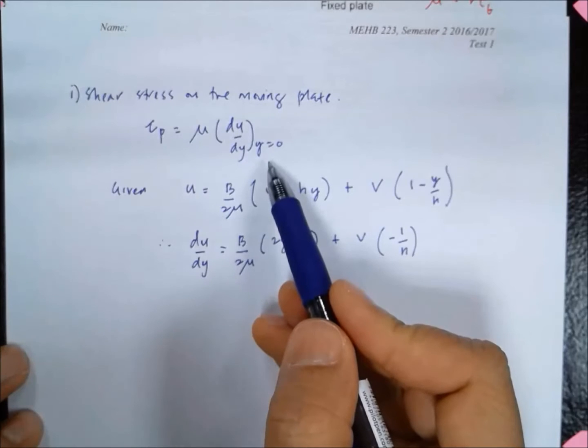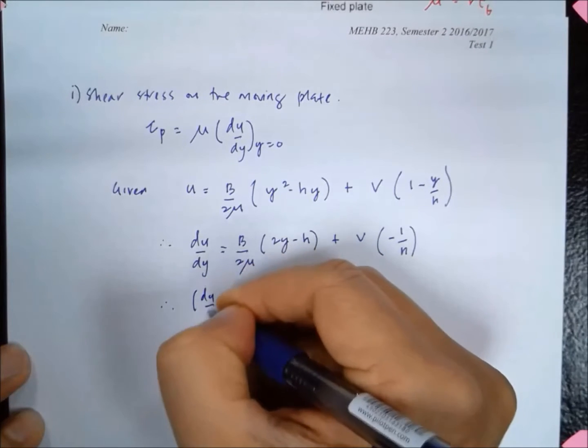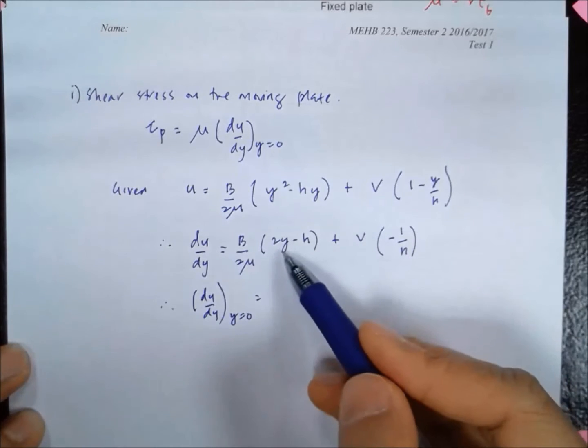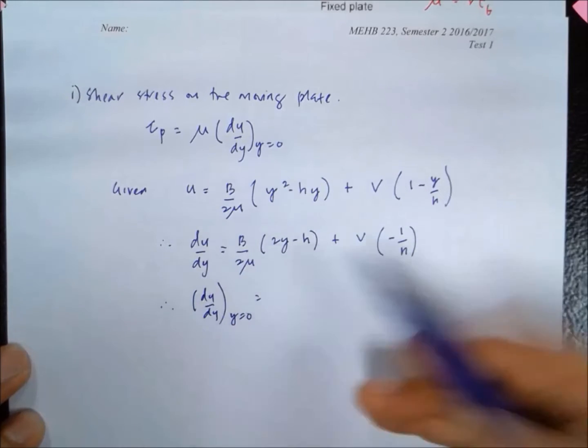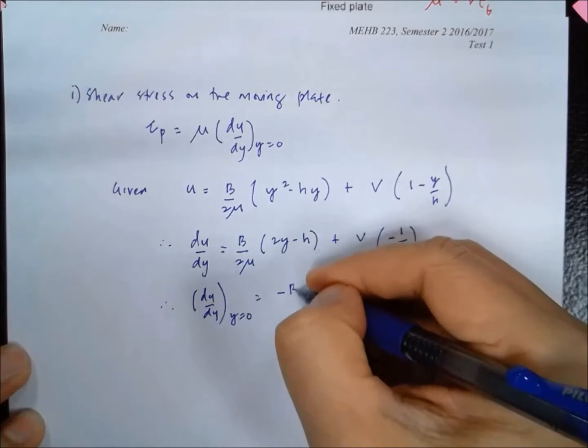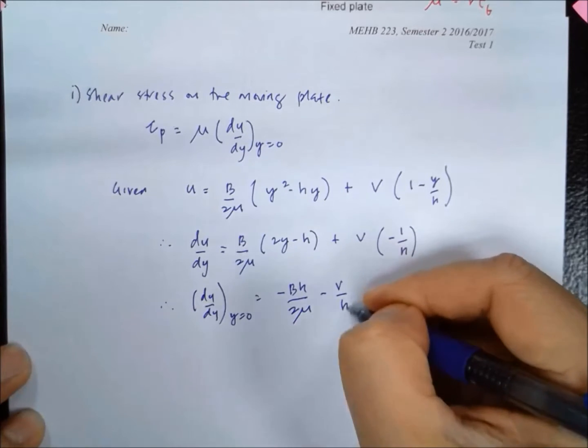So du/dy at y equals 0, all we need to do is substitute the value of 0 here. So we have negative Bh divided by 2 mu minus V over h.